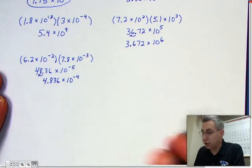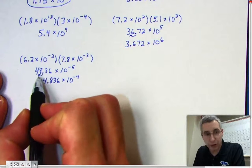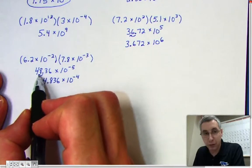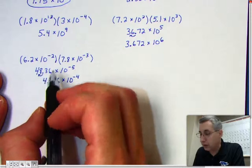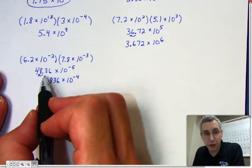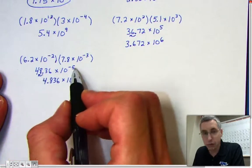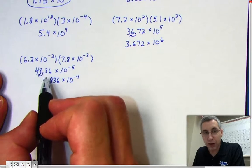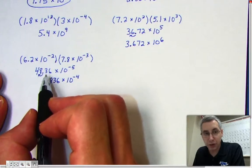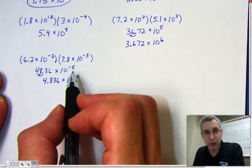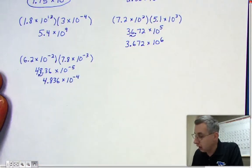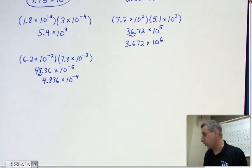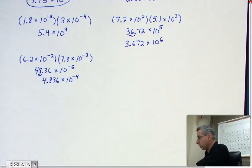Now, if you ever had to move your decimal more than one place to correct improper scientific notation, just count the number of places you needed to move it and add that number to your exponent. In this case I only had to move the decimal once, but if you had to move it twice, you would add 2. That concludes the part of the lesson on multiplying using scientific notation.